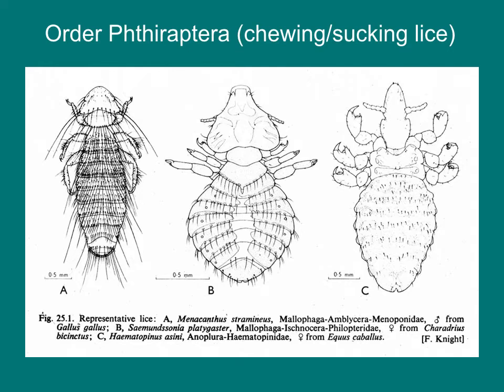This group also includes the lice, the order Phthiraptera. These are all ectoparasites of vertebrates. There are both chewing lice and sucking lice. Chewing lice are mostly associated with birds — they live within the nests and feed on skin cells and feathers. Sucking lice are mostly associated with mammals; they feed on the blood of their hosts and transmit many diseases, including typhus. We will cover disease vectors in another lecture later in the class.